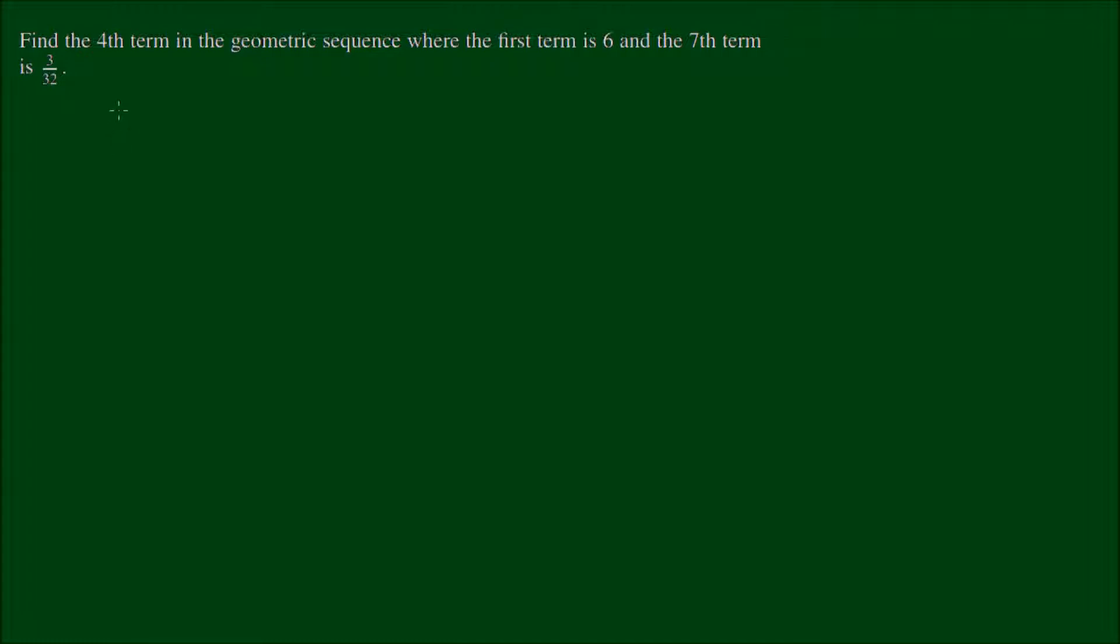So in our introductory video on geometric sequences, we learned that the nth term of the geometric sequence, T sub n, is equal to a, where a is the first term, or what we call the scale factor, times r, which is the common ratio, to the power of n minus 1.